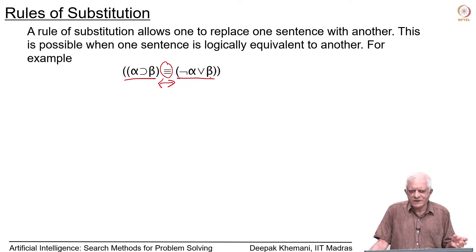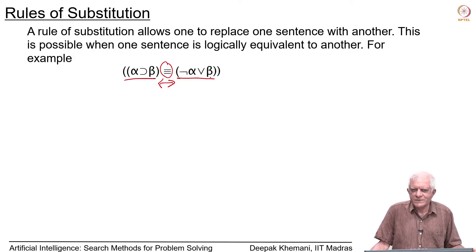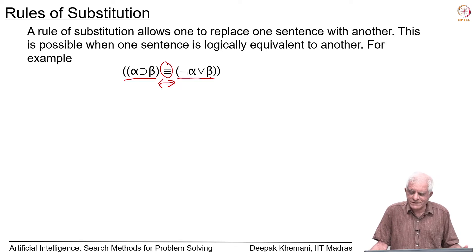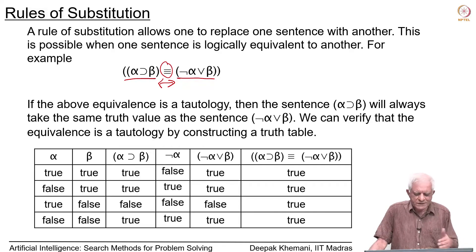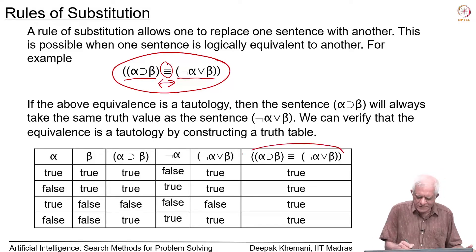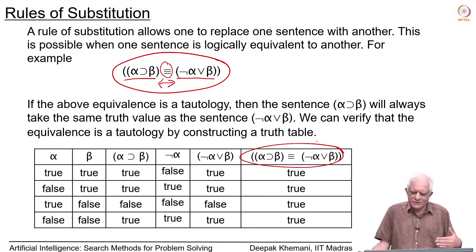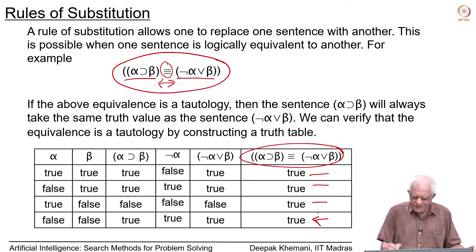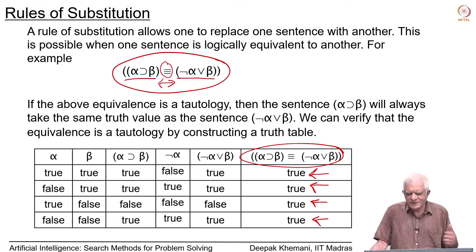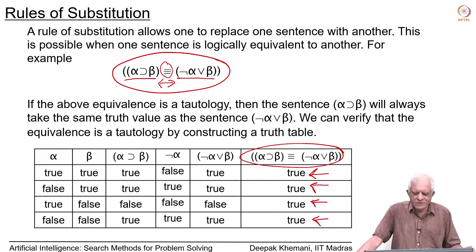In modus ponens, you could only go from left to right: if you are given alpha and alpha implies beta, you could add beta. But if you are given alpha implies beta and you are given beta, you could not add alpha — you should go back and look at why that is not a sound rule. Rules of substitution work in both directions. The key to accepting them is that they are based on a tautology — you can verify this from the truth table, where in every row the last column is true. There is a similar reasoning for rules of inference, which are tautological implication statements.